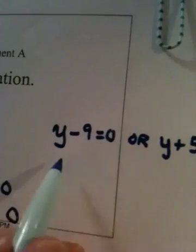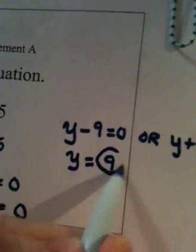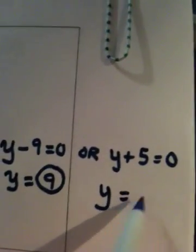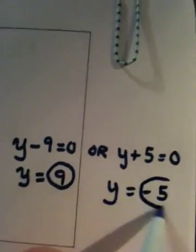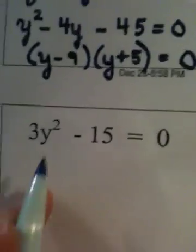So, if I have two expressions multiplied together to give me 0, that means that either the first expression is 0 or the second expression is 0. If y minus 9 is 0, that means y is equal to 9. And if y plus 5 is equal to 0, y is equal to negative 5. And we're done.